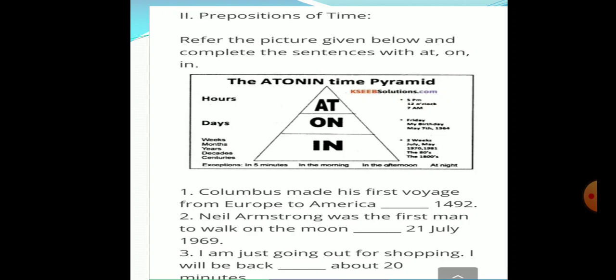And in prepositions is used whenever we have the names of the weeks, months, years, decades and centuries. Complete your assignment in a week. He was born in the month of March. Many examples you have. But there is an exception here. In 5 minutes, in the morning, in the afternoon, and at night.